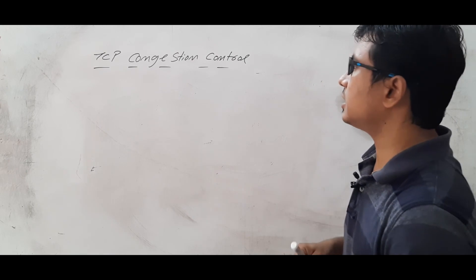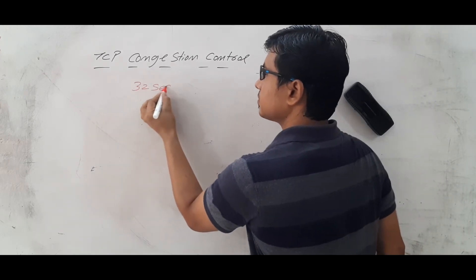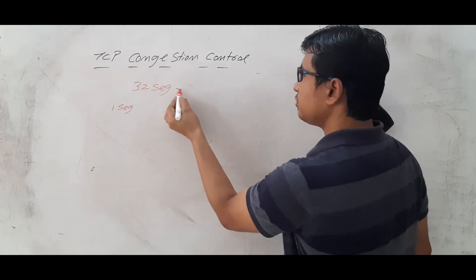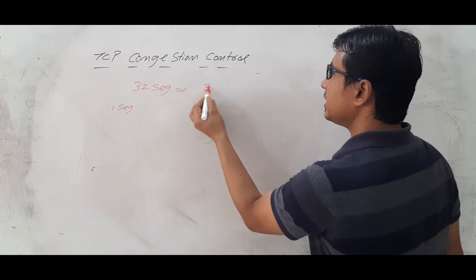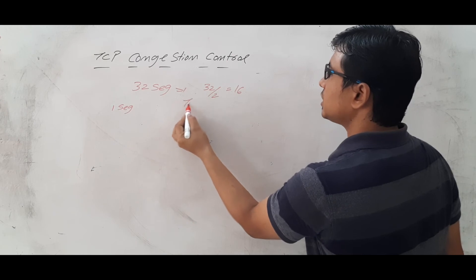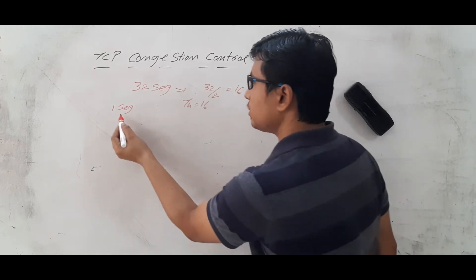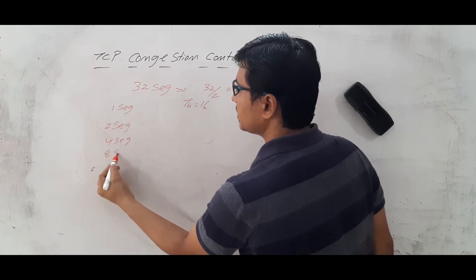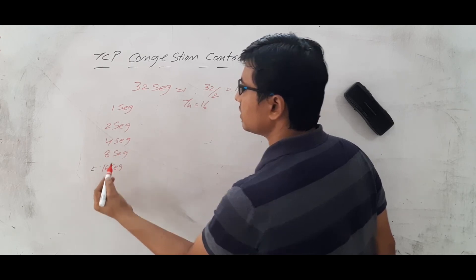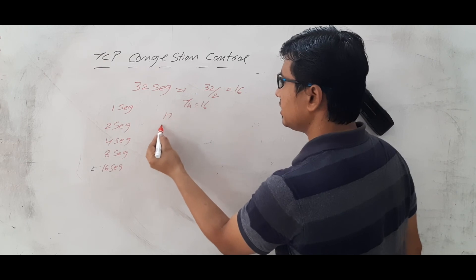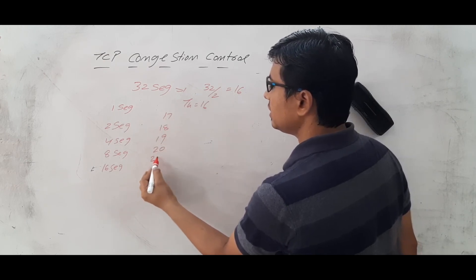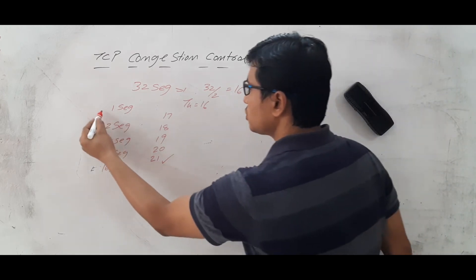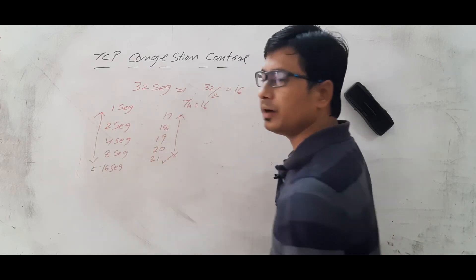Let me discuss another example. Suppose the sender can send up to 32 segments. The threshold value is 32 / 2 = 16. It will send 1 segment, then 2, 4, 8, 16 — that is the slow start phase. After the threshold of 16, it sends 17, 18, 19, 20 linearly — that is the congestion avoidance phase.